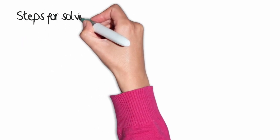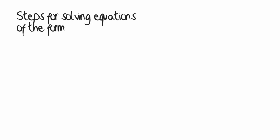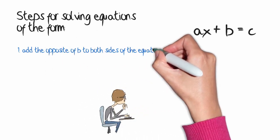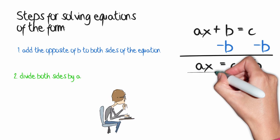For those of you who like to see the process without any of those pesky numbers, the two examples we just looked at were equations of the form ax plus b equals c. You can solve any of these problems by doing two simple steps. First, we add the opposite of b to both sides of the equation. Then we divide both sides by a, and the result is the solution for x.